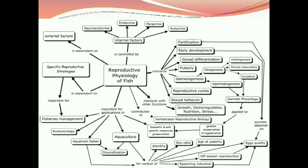Here is a big sketch of the reproductive physiology of fish. This sketch shows which factors the reproductive system depends on. Reproductive system physiology depends on external factors and internal factors. The reproductive system is controlled by neuroendocrine, endocrine, paracrine, and autocrine hormones. Reproductive physiology of fish is also concerned with fertilization, larval development, gonad differentiation, puberty, gametogenesis, oogenesis, spermatogenesis, reproductive cycle, and sexual behavior. It also interacts with other functions such as growth, osmoregulation, nutrition, and stress.